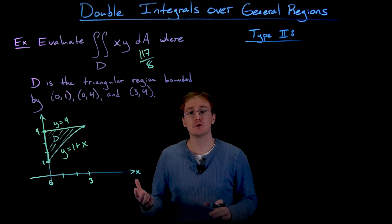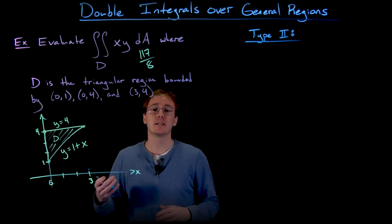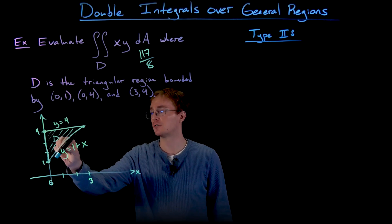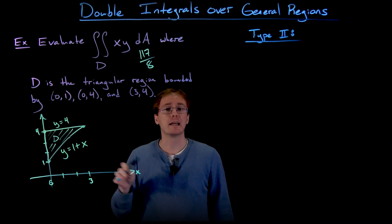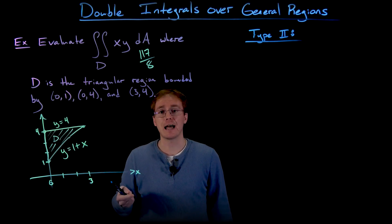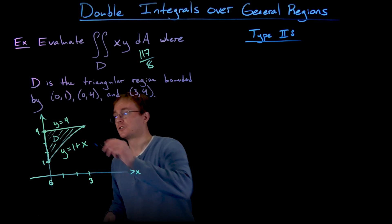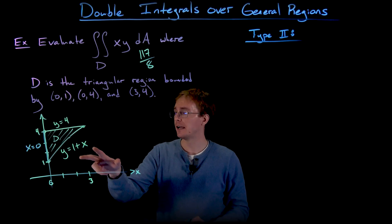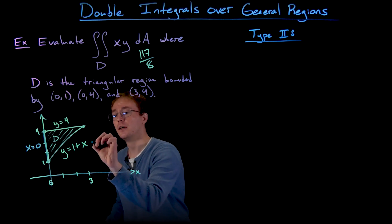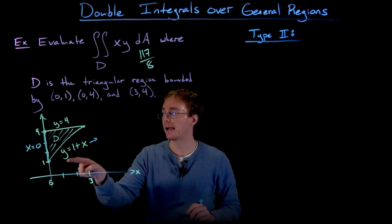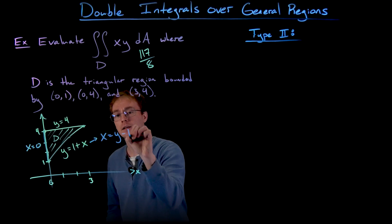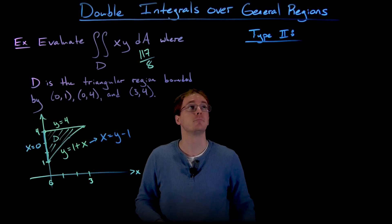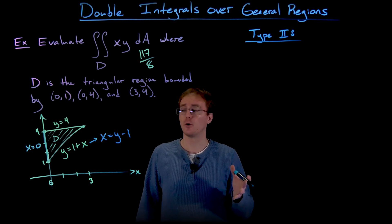For a type 2 region, we visualize region D differently — bound by a curve on the right and a curve on the left, with those curves written as x as functions of y. Our leftmost curve is the y-axis, given by x equals 0. Our rightmost curve is still y equals 1+x, but we solve for x to get x equals y minus 1. Now we're ready to set up our double integral for this type 2 region.